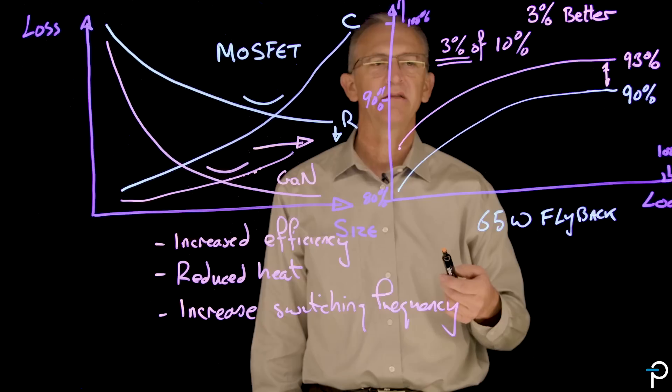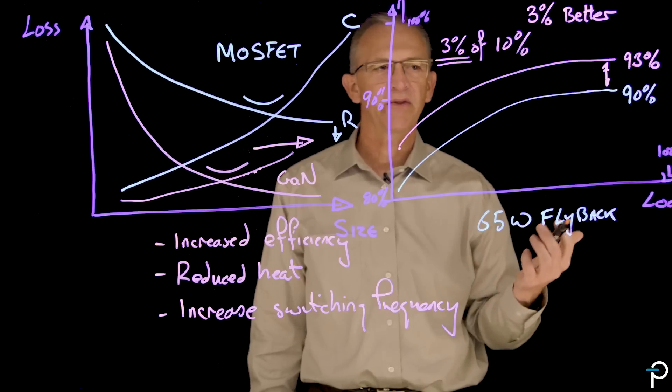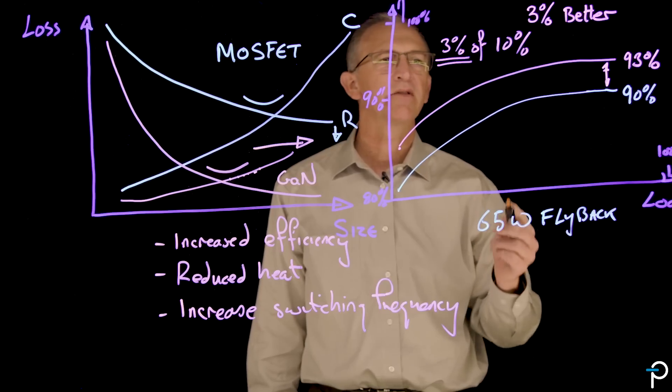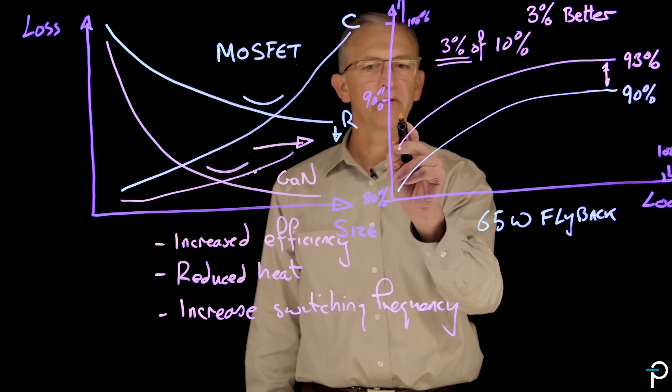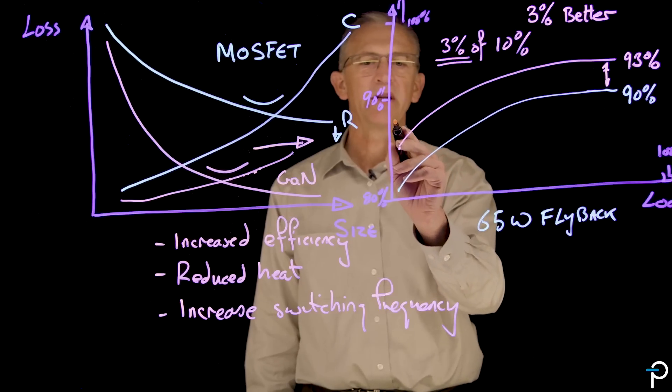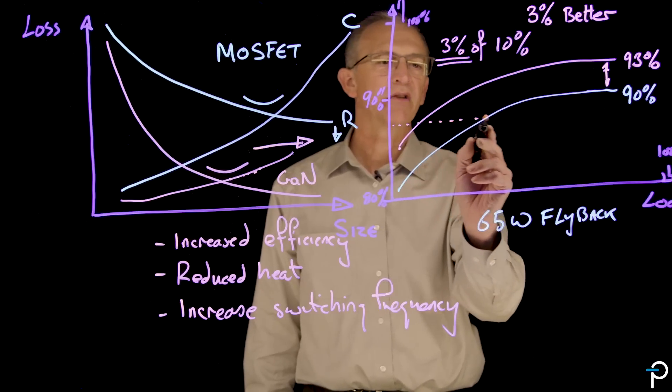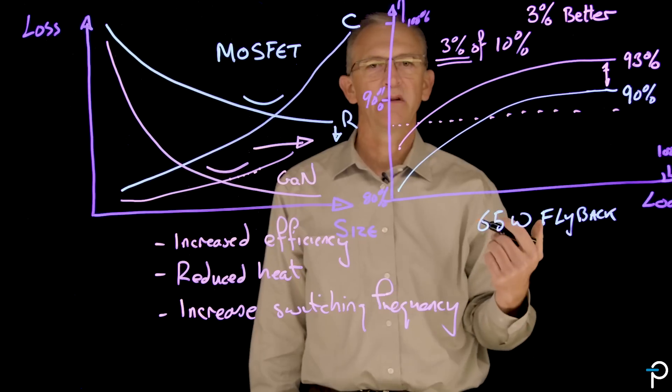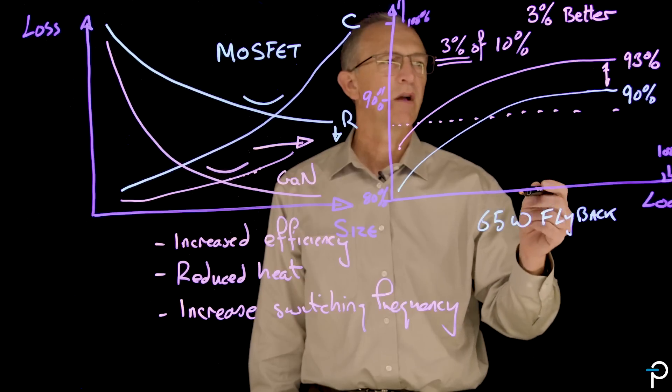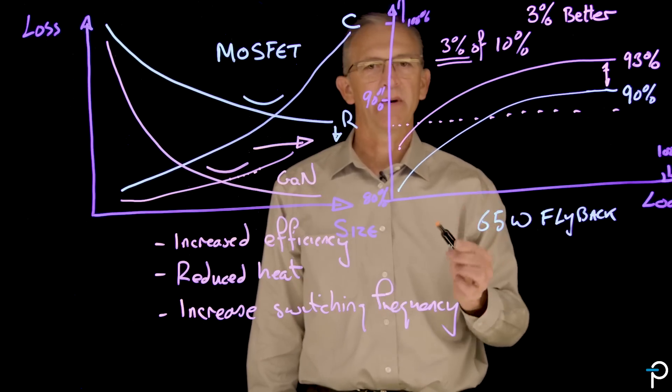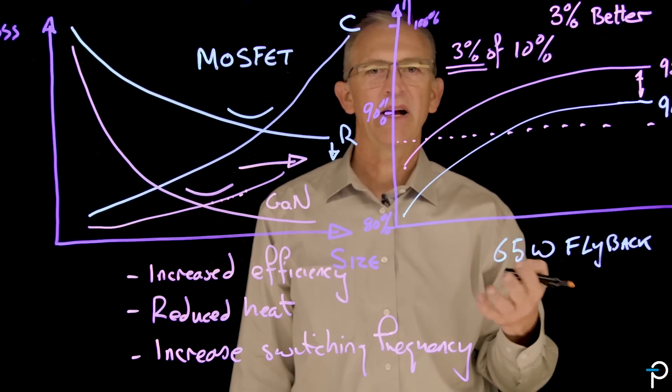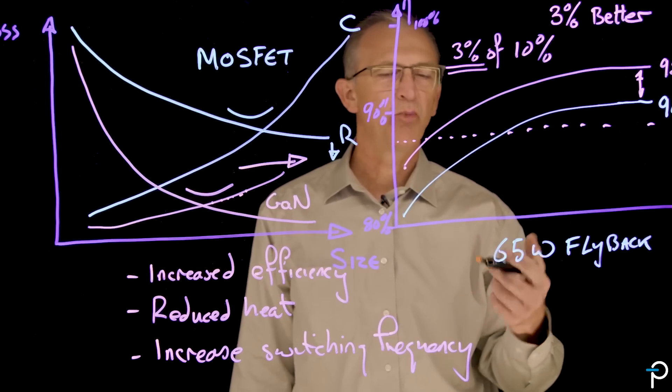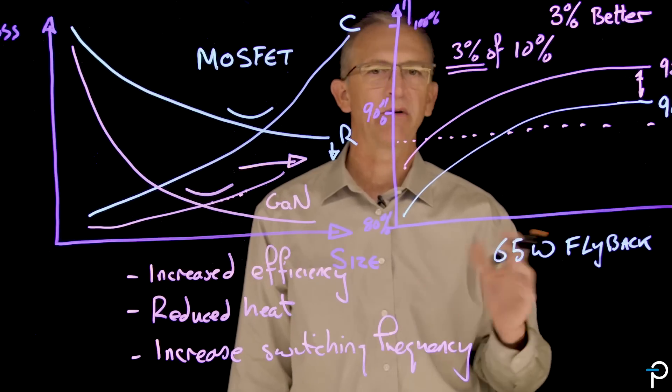Less heat sinking, less size, longer lifetime, doesn't get so hot. So there are a variety of benefits. Now the regulatory environment in which we operate tends to be much lower, and so typically you can meet the regulatory guidelines with a MOSFET-based power supply. But with a gallium nitride-based power supply, you can build something that's far smaller and more compact, lighter, easier to carry around, more power for the same size, however you want to think about it. And that's a market benefit.